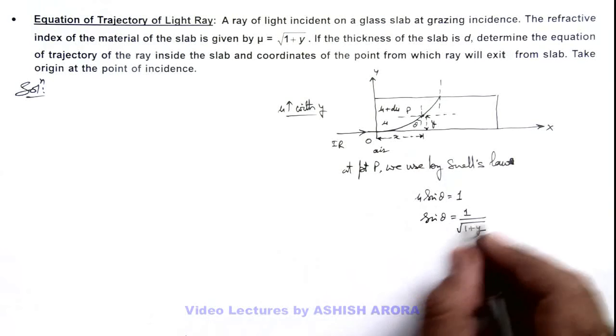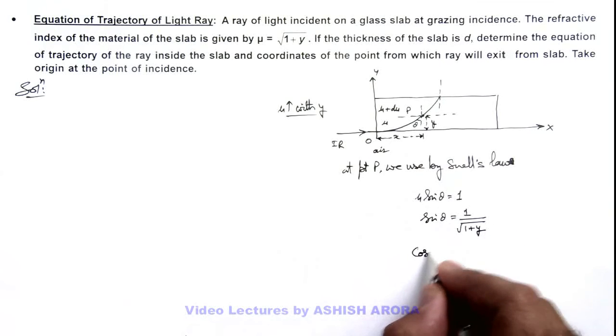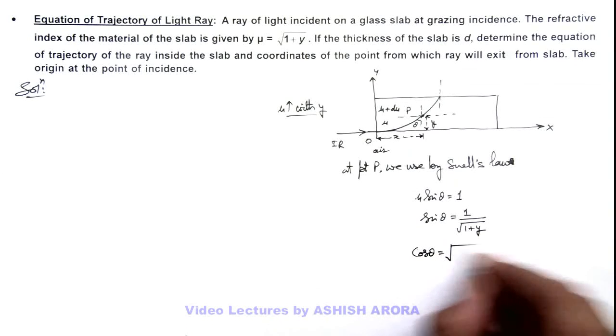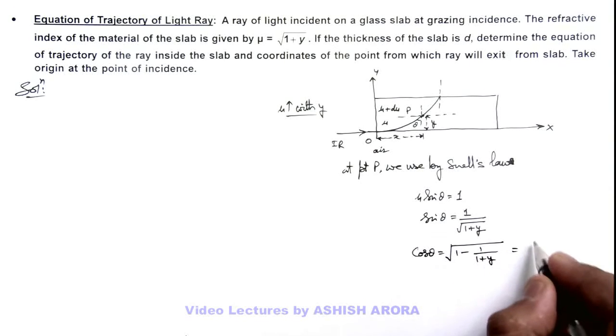Here if sin θ is this, we can write the value of cos θ is √(1 - sin²θ), that is 1/(1 + y). So this is equal to √(y/(1 + y)).